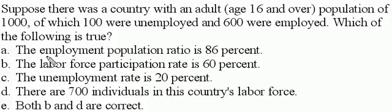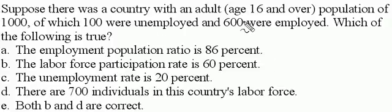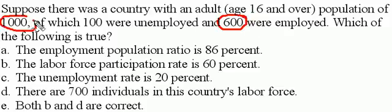Let's start off with A. The employment-population ratio is 86%. Well, the employment-population ratio is simply those employed divided by the total population. Those employed are 600, the population is 1,000 — that would be 60%, so we can eliminate A.